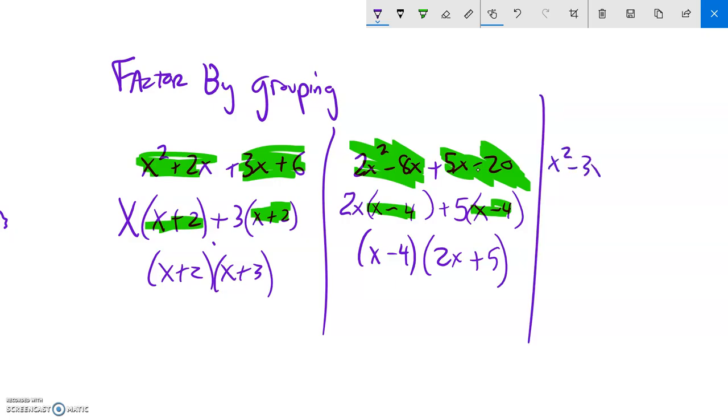x squared minus 3x minus 7x plus 21. Now this one's a little bit different. I still have the group of 2, group of 2. But notice that here, this is minus. So I'm going to be factoring out a negative sign.